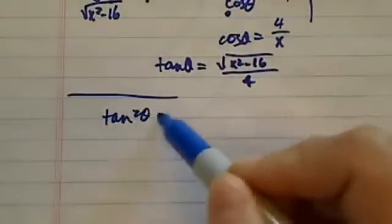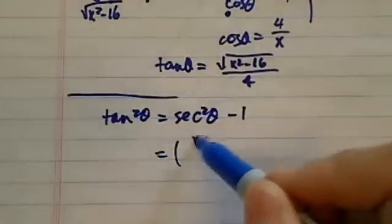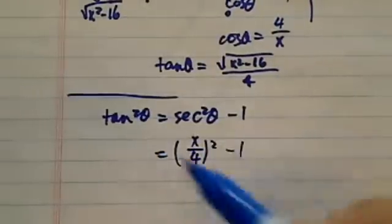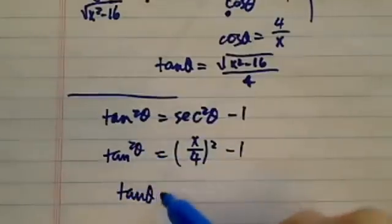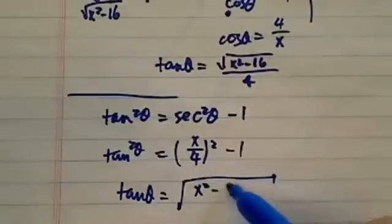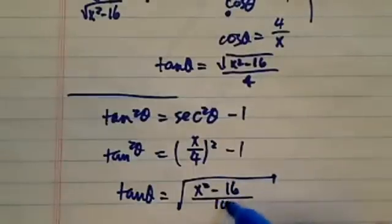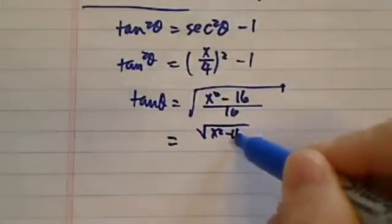There's an identity that tangent squared theta equals secant squared theta minus 1. So since you know this is x over 4, that gives you tangent squared. From there, you can see tangent theta is really the radical of x squared minus 16 divided by 16. Or you're going to get exactly the same answer we had before, which is radical x squared minus 16 over 4.